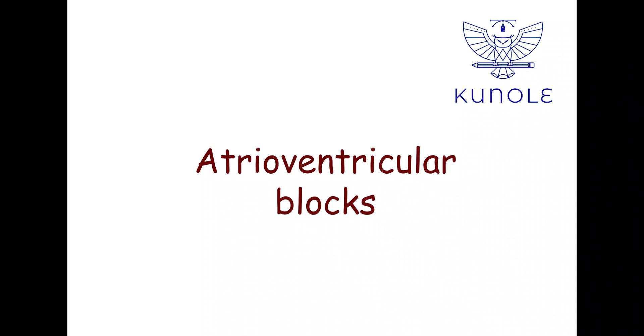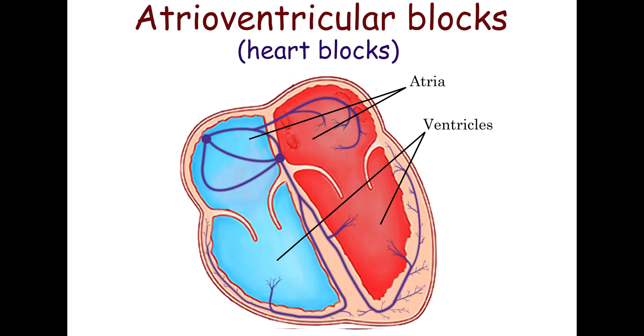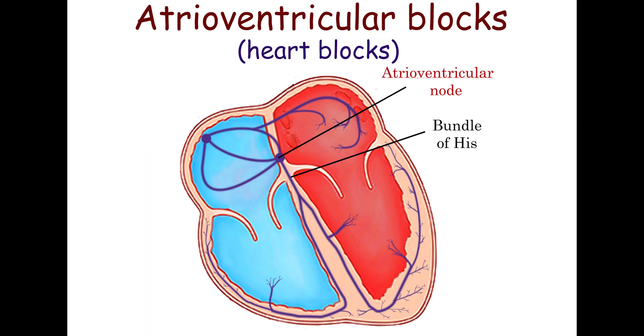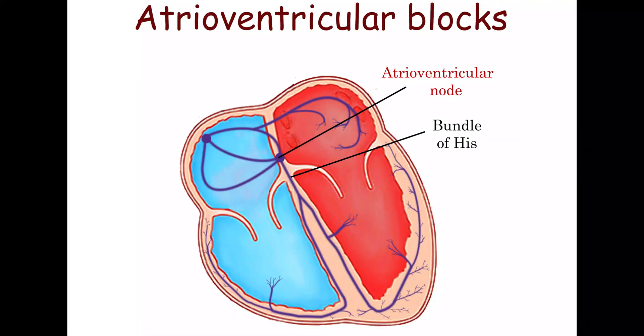In this video we will talk about atrioventricular blocks. Atrioventricular blocks, also called heart blocks, refer to the conduction disorders between the atria and ventricles. They may occur at the level of the atrioventricular node or the bundle of His.